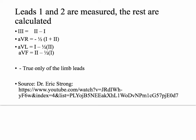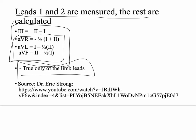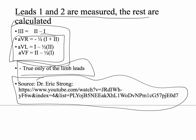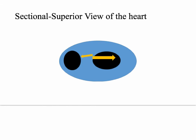In actuality with an EKG, leads one and two are the only ones measured directly. The rest are calculated using equations — lead three equals lead two minus lead one, and the others use trigonometry. This calculation is true only for the limb leads. We also have precordial leads, which are all measured directly. My source on this is Eric Strong's medical lectures on YouTube — the best free lectures you can get. With the limb leads we're only looking at the heart in two dimensions; the precordial leads look outward in the third dimension and are sometimes called chest leads.